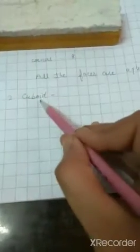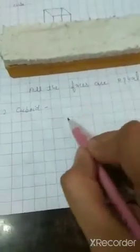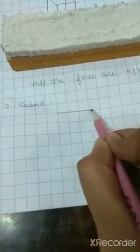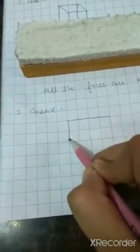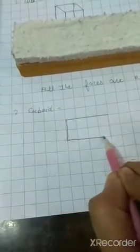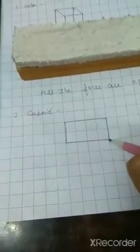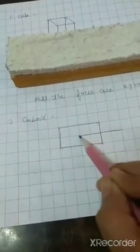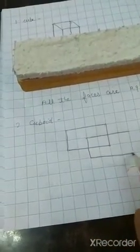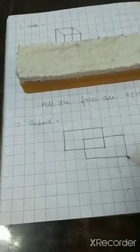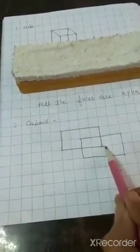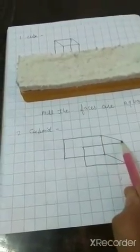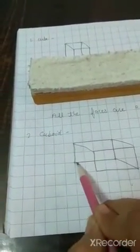The next shape is cuboid. It is just like your duster. So how to draw? First of all you have to draw a rectangle — four boxes, here two boxes, then four, and then two. Then again you have to draw one more rectangle of equal size. Be careful, equal size. Then you have to join their corners. This way you can draw your cuboid.